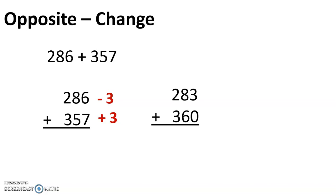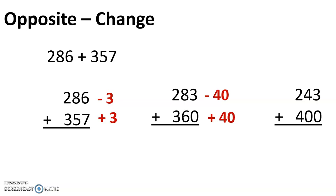Now we could take this a step further, and let's say we bumped that 360 all the way up to 400. We'd have to add 40, which means we would have to subtract 40 from the 283. That would leave you with 243 plus 400. This is much easier to solve — the 243 plus the 400 is going to give us 643.